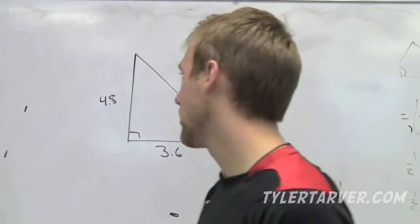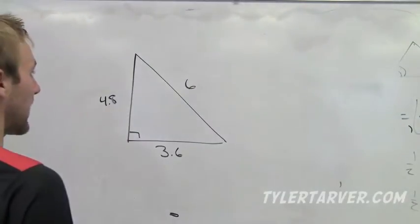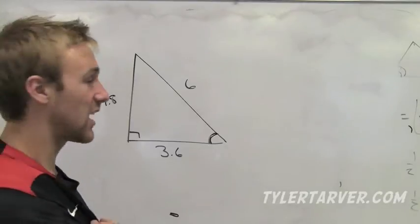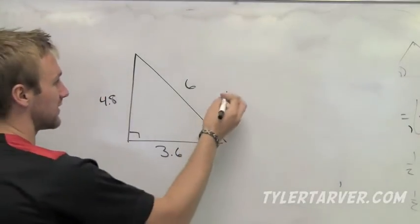All you're doing here is, if you have a couple of the side lengths, you can find out the angle measures. Let's say we want to find out this angle measure. Do you want to use sine, cosine, or tangent? We'll use sine, since this is the first one.